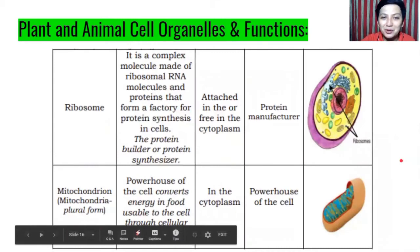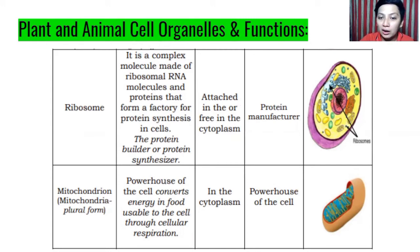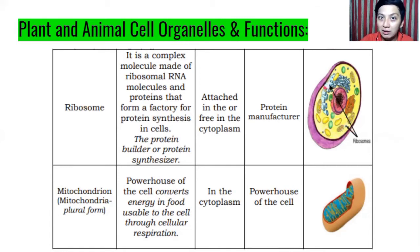Next, we have the ribosome. It is a complex molecule made of ribosomal RNA molecules and proteins that form a factory for protein synthesis in cells — the protein builder or protein synthesizer. Ribosomes can be attached to the endoplasmic reticulum or freely found in the cytoplasm. It is the protein manufacturer.